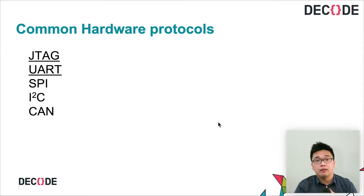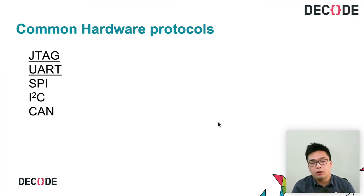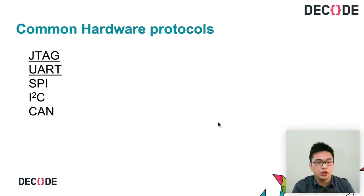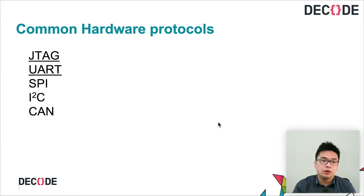Just as in software vulnerability hunting you want to be familiar with protocols like TCP, TLS, HTTP, and FTP, the same applies to hardware vulnerability research. You want to be familiar with at least these five protocols. We'll go through JTAG and UART today. SPI and I2C are used to communicate with peripheral devices that interact with the main CPU. CAN is a bus protocol mostly used in automotive applications — so if you want to hack a Tesla, that's the protocol you need to learn.